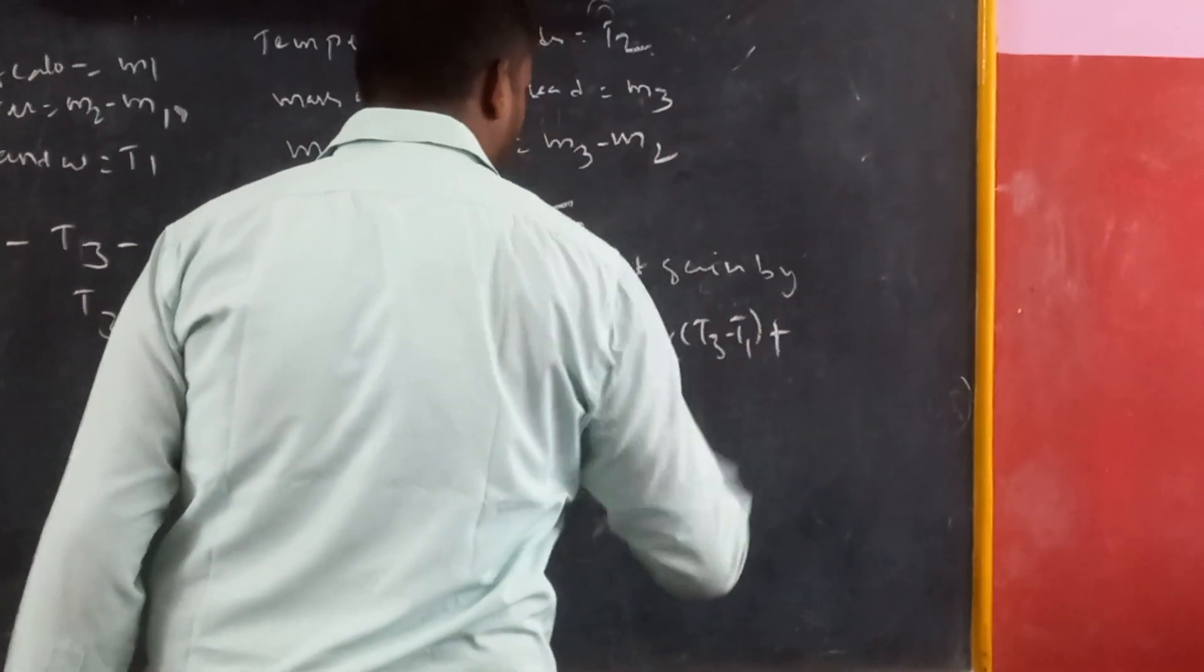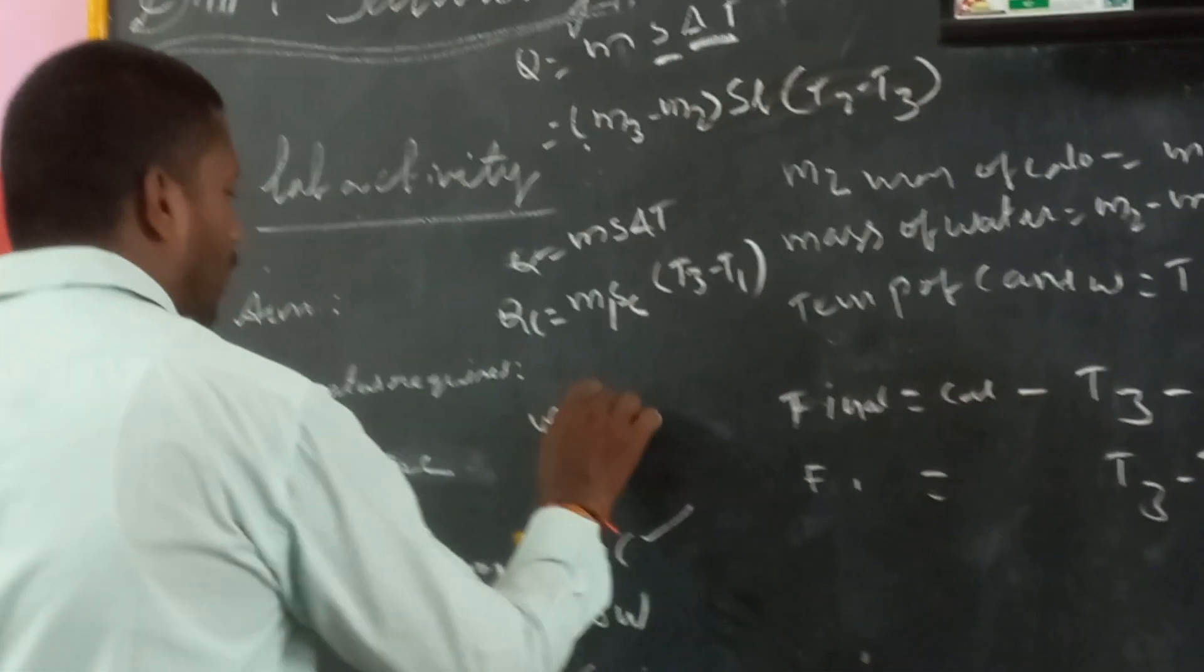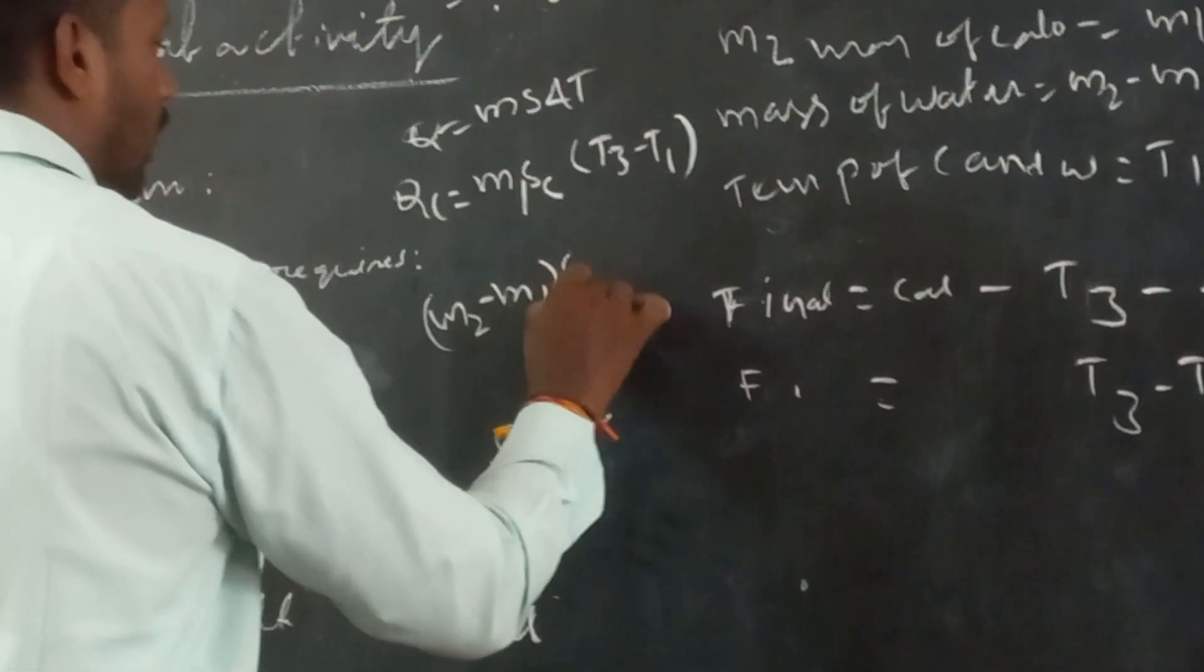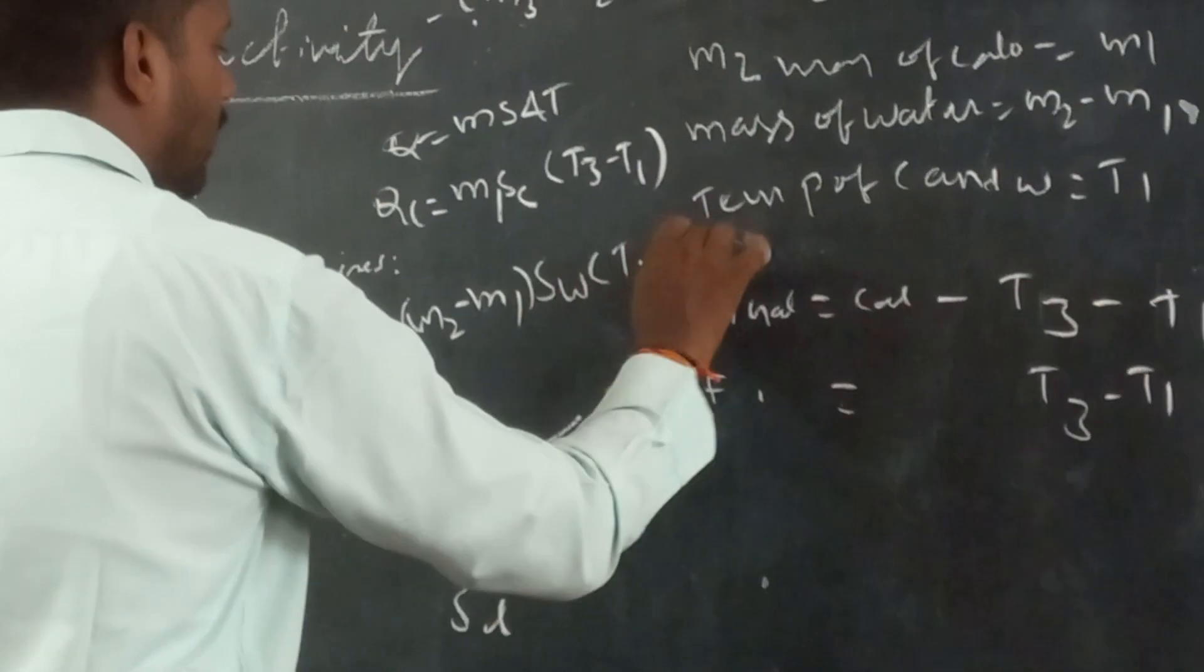Plus, what about water? Water is: M2 minus M1. S is SW. T3 minus T1.